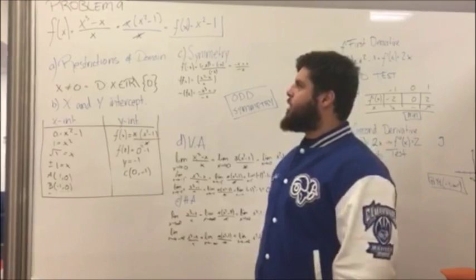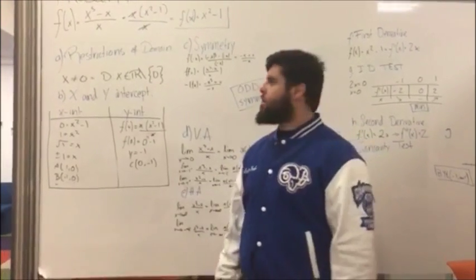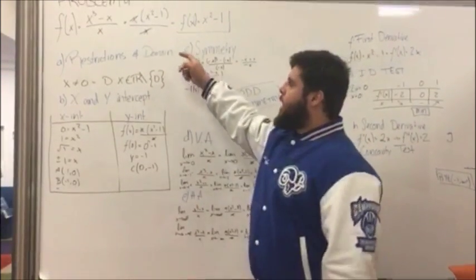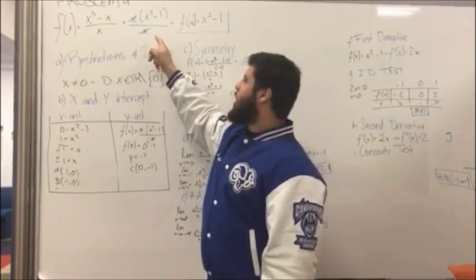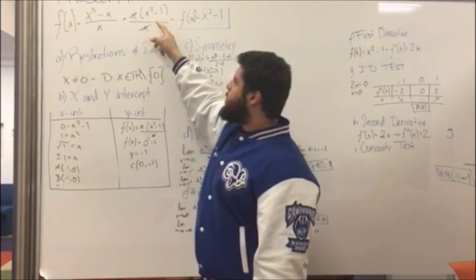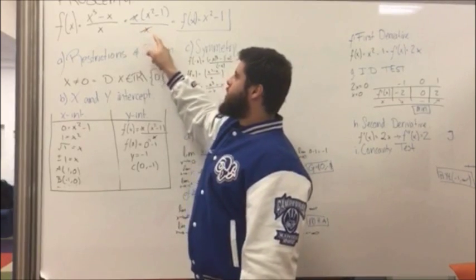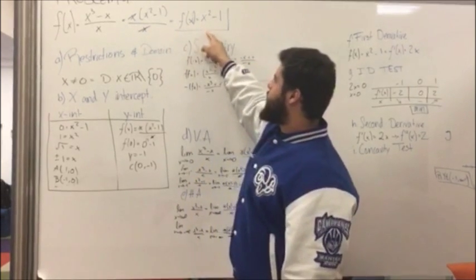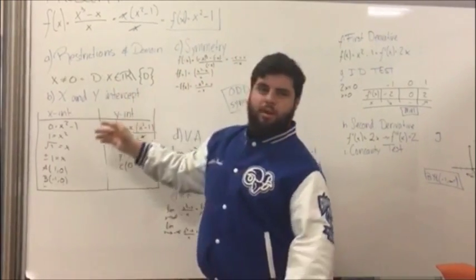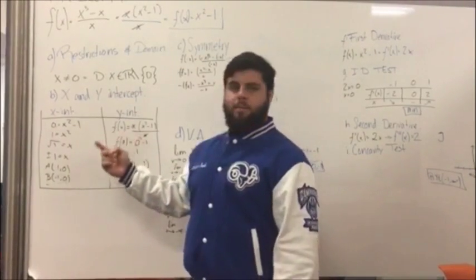Our function is f of x equals x cubed minus x over x. The first step is to simplify everything. We have to factorize one x, so we obtain x squared minus one, multiplying x. We can simplify this x with this one, and then obtain x squared minus one.